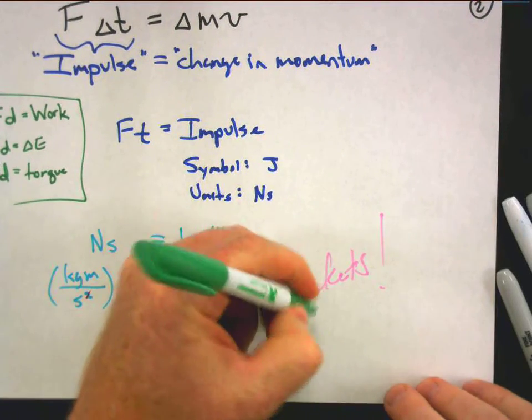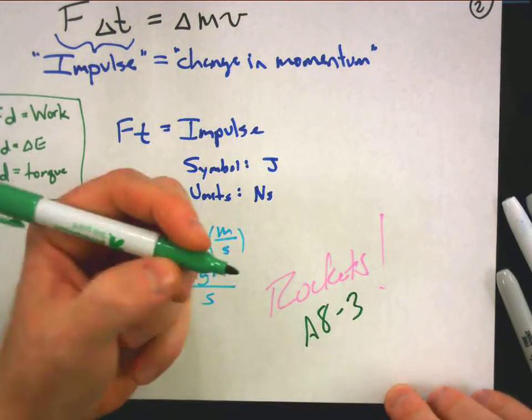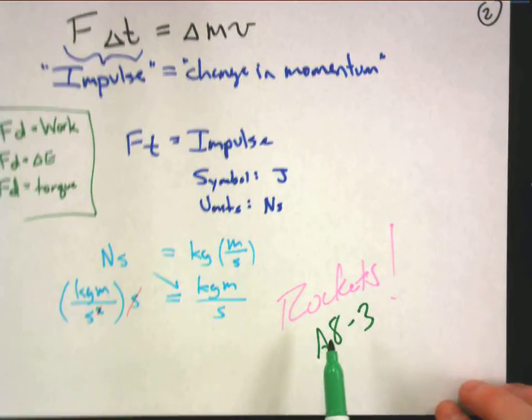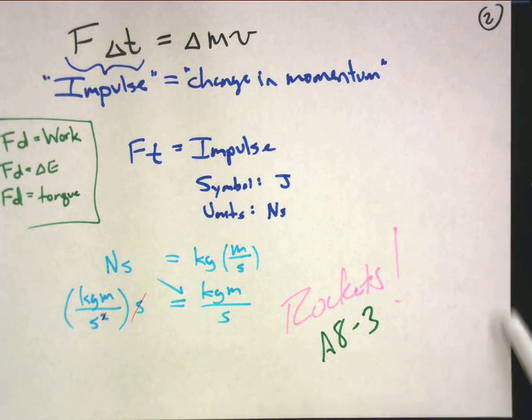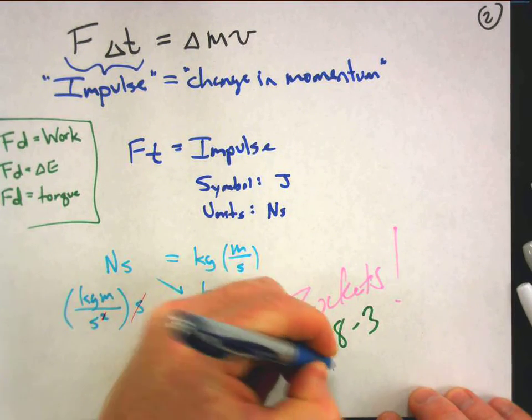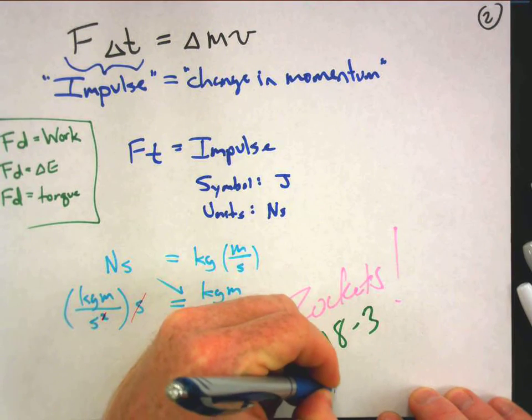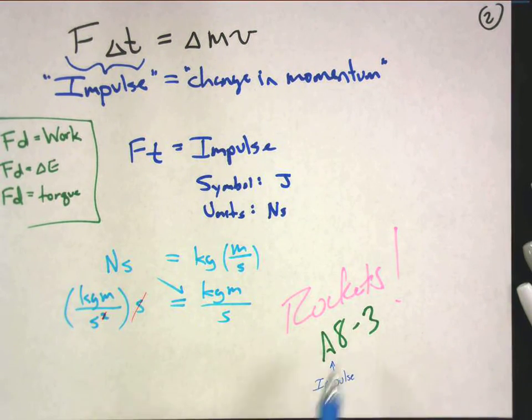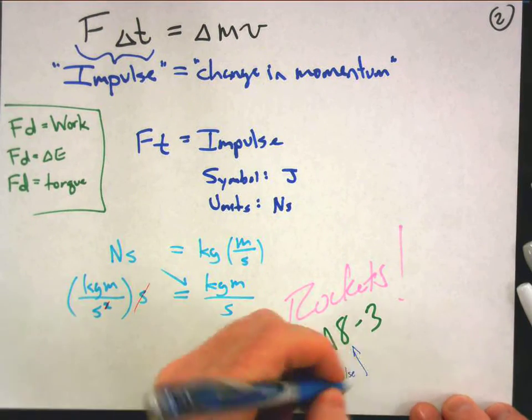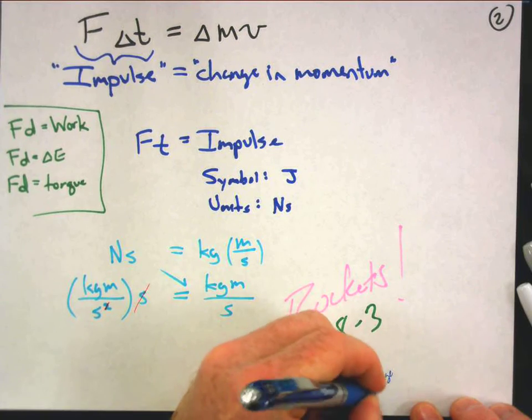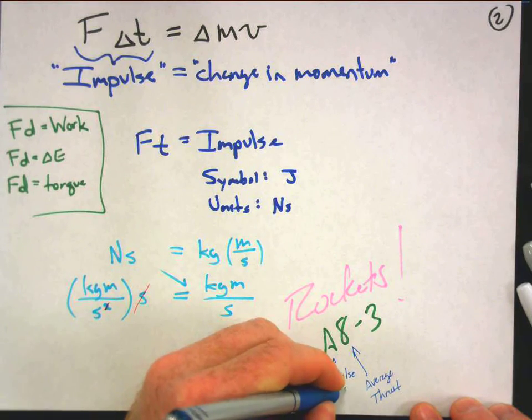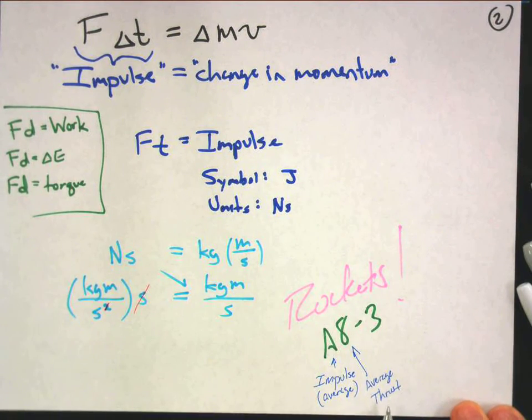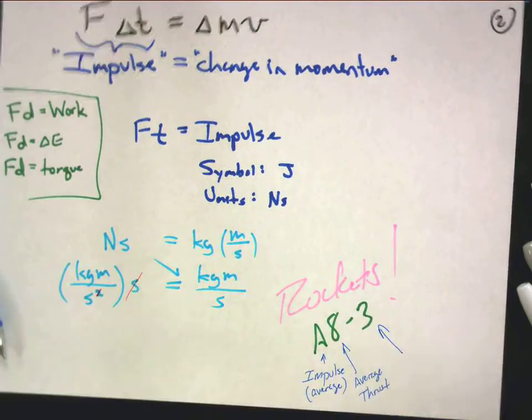Those designations mean something, so let's check that out. You always see, well I should say almost always, you see a letter, a number, and then a hyphen and another number. Here's the deal: the first thing, the letter, signifies the impulse that the engine provides. The first number signifies the average thrust. The thrust is just a force. I should say average for the impulse as well, average impulse, average thrust.